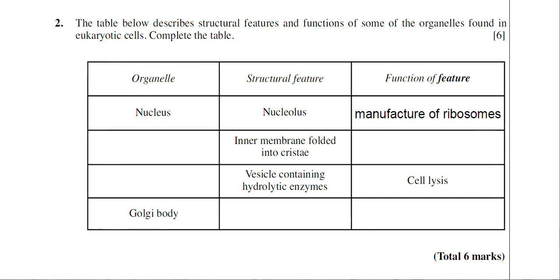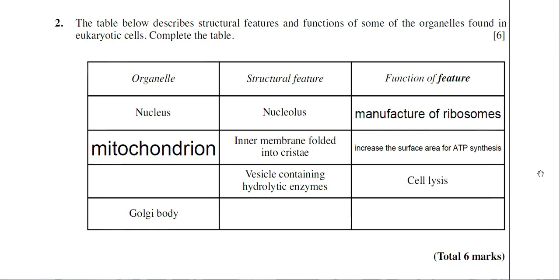In the second row, the structural feature listed is inner membrane folded into cristae. There's only one organelle that has this highly folded inner membrane called cristae, and that's the mitochondria. The function of the folded inner cristae is that it increases the surface area inside the mitochondria for enzyme attachments — it's where the reactions of aerobic respiration occur, so it's the region where ATP is actually synthesised. The answer is mitochondrion, and the function is to increase the surface area for ATP synthesis.